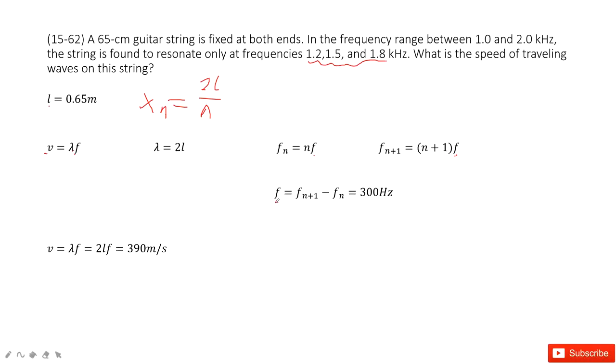So it looks like the fundamental frequency is just f_(n+1) minus f_n. That is just the difference between the frequency for two nodes. So there we can see the difference between two nodes is just 300 Hz.